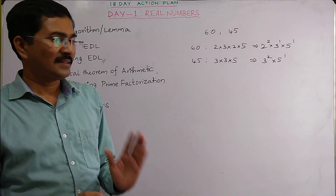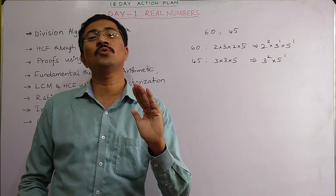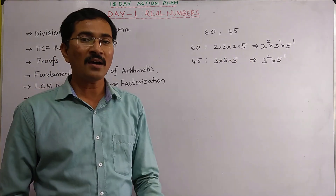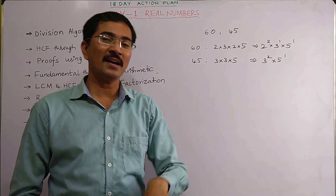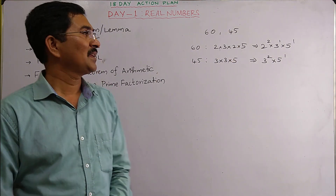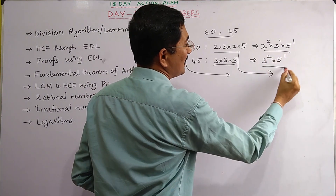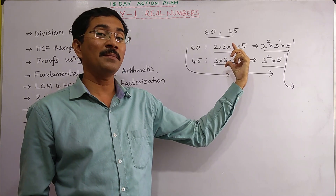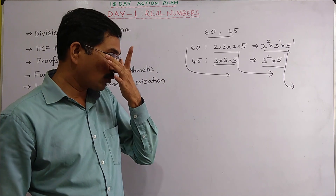The question may be asked at different stages: given the numbers directly, given the factored form like 2×3×2×2×5, or given the prime power form like 2²×3×5 and 3²×5. Depending on where it is given, you start from that stage. In exams it may appear as 1-mark or 2-mark questions in different forms.